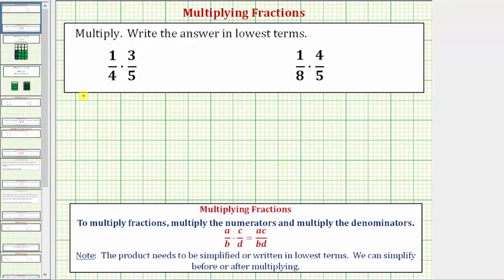So in our first example, we have 1/4 times 3/5. So when we multiply, the numerator would be 1 times 3, and the denominator would be 4 times 5.